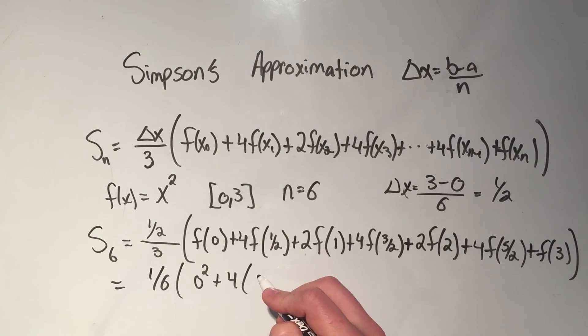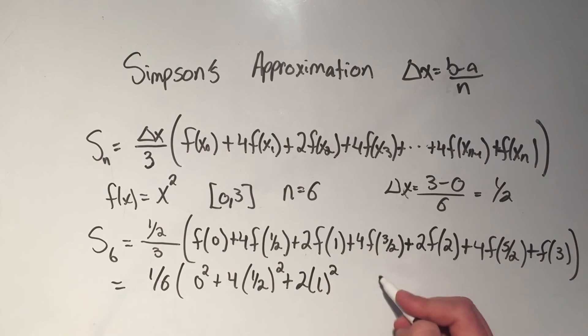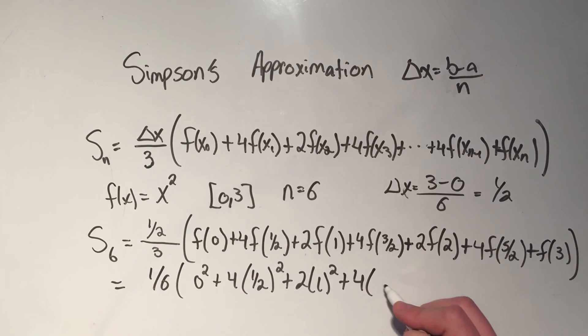plus 4 times, I plug 1 half into my function, that's 1 half squared, plus 2, I plug in 1, that's 1 squared, plus 4 times, I plug in 3 halves, that's 3 halves squared,